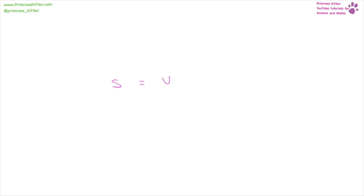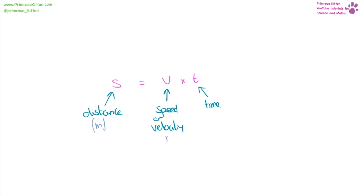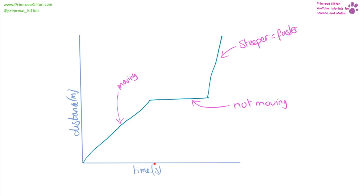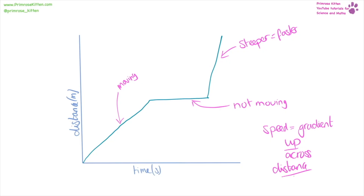Distance equals speed times time. Distance is measured in meters. Speed or velocity is measured in meters per second. Time is measured in seconds. Distance-time graphs tell us lots of information. If we have a slope that is increasing, we are moving, and the steeper the slope, the faster we're moving. If it is a flat line, it is not moving — as time increases, distance is not increasing. We can calculate speed as the gradient, which is distance over time.